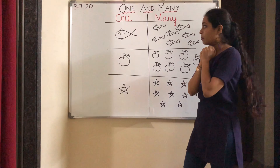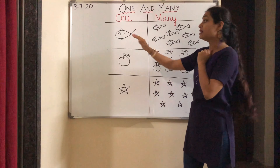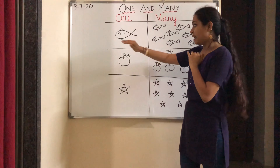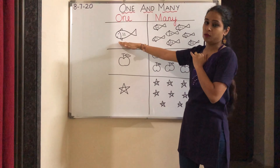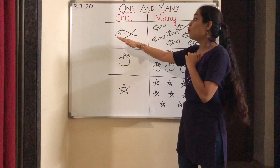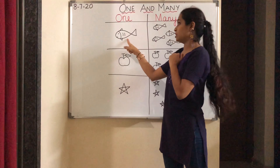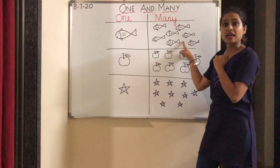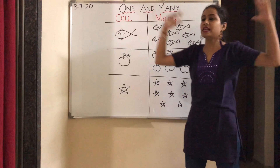Now look at the picture. What do you see? What is there in the first picture? There is one fish. How many fishes? One fish. And over here there are many fishes.